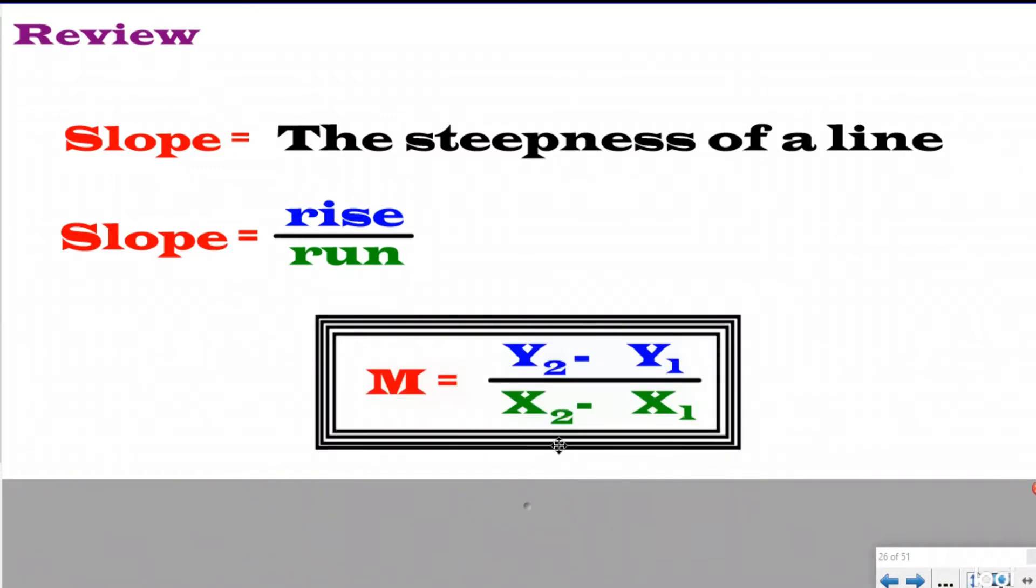And so the formula that we discovered, the equation that we discovered to help us find slope—M stands for slope—is the change in y over the change in x. So y2 minus y1 over x2 minus x1. This is our equation that we used last video for slope. And today's going to be a little bit different because now we're going to have the slope and we're going to be looking for one of our missing equations.